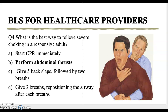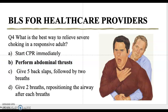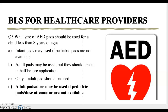Question four states: what is the best way to relieve severe choking in a responsive adult? A — start CPR immediately; B — perform abdominal thrusts; C — give five back slaps followed by two breaths; D — give two breaths and reposition the airway after each breath. The correct answer is B — perform abdominal thrusts, also known as the Heimlich maneuver, where you stand behind the patient and give a quick upward thrust to push the object out.